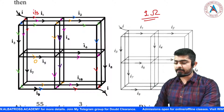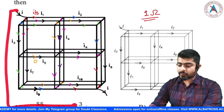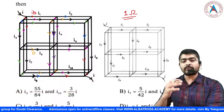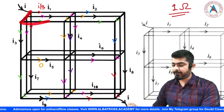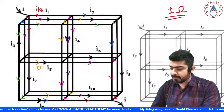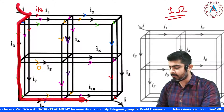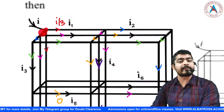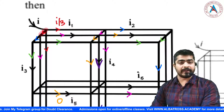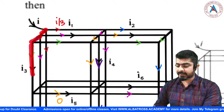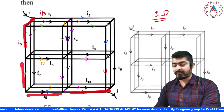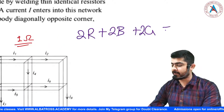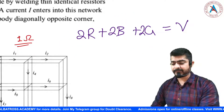Let's start solving. Assume the total voltage between the two ends is V. Following the first path from entry to exit — through red, blue, green, green, blue, red — the voltage equation is: 2×red + 2×blue + 2×green = V. This is my first equation.